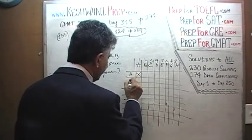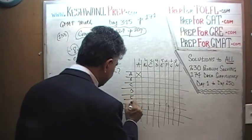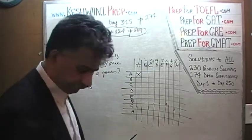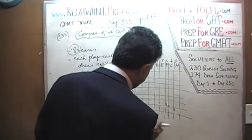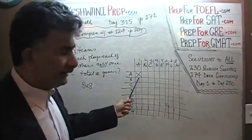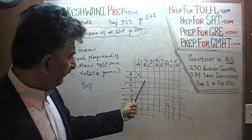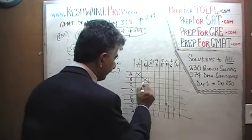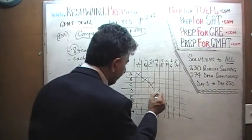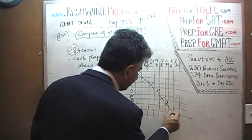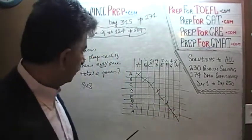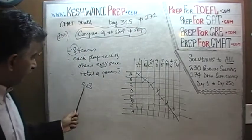The question is, do we count this box? Obviously team A is not going to play itself. Similarly, team B is not going to play itself. That doesn't count. C does not play itself. None of the diagonals count. The diagonals do not count. So the very first thing we notice is that it is not 8 times 8.